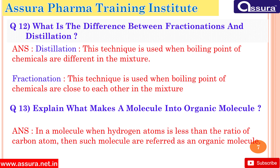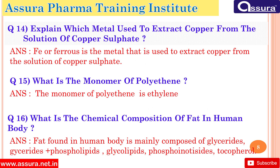Which metal is used to extract copper from a solution of copper sulfate? Iron (Fe) is the metal used to extract copper from a solution of copper sulfate. What is the monomer of polythene? The monomer of polythene is ethylene.